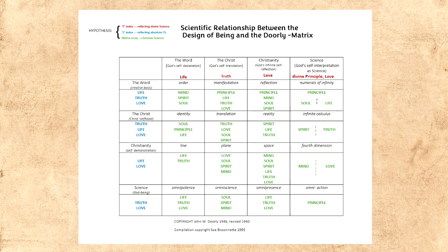John Dorley had given the epitomes — we have the epitome at the point of word as word: order; word as Christ: identity and line; line, omnipotence, and so on. We have 16 epitomes, one at each point of intersection, to help us grasp that point of intersection. Can you see that John Dorley left us with a matrix that was almost entirely, but not entirely, in the language of the 7,000-year period?